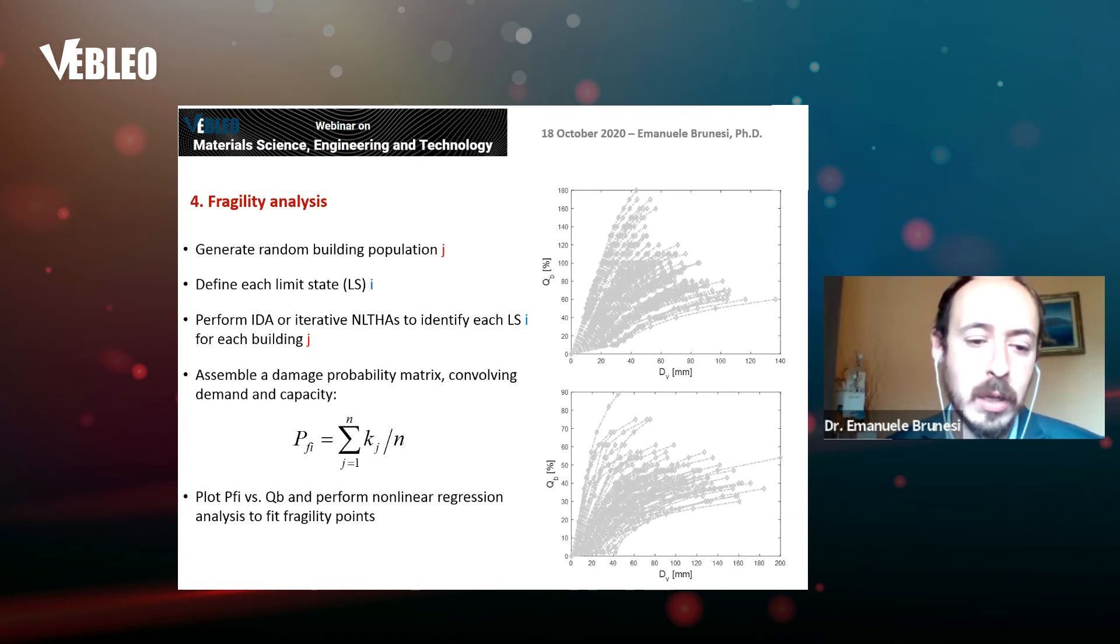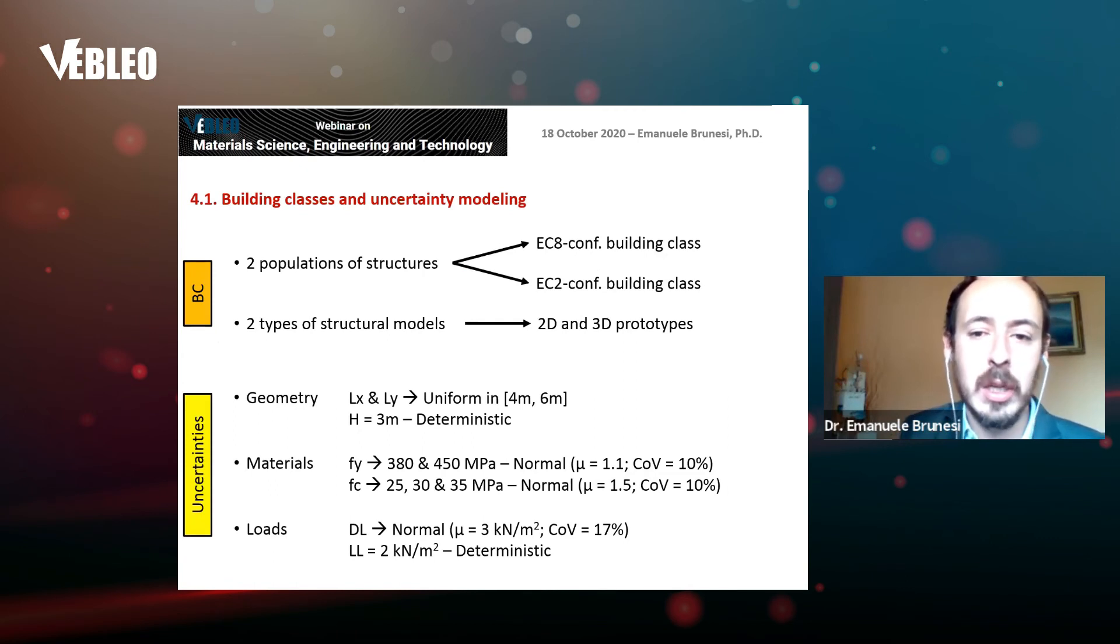We considered two different populations: EC8 conforming and EC2 conforming building classes. We consider 2D and 3D prototypes to evaluate and quantify the influence and differences. Some uncertainties: we consider uncertainty in terms of geometry, materials, and load. Here are the probability distribution functions assumed for every random variable involved in the problem.